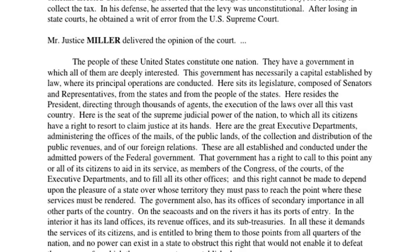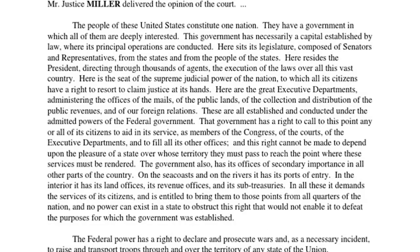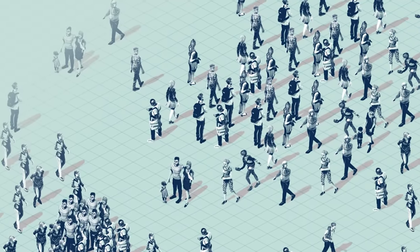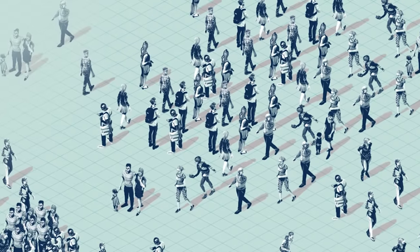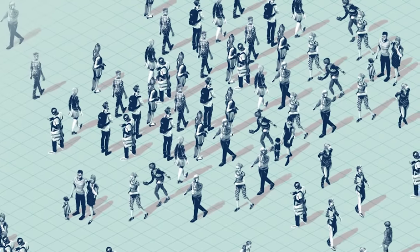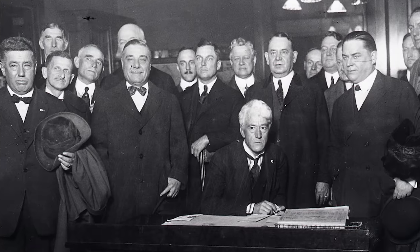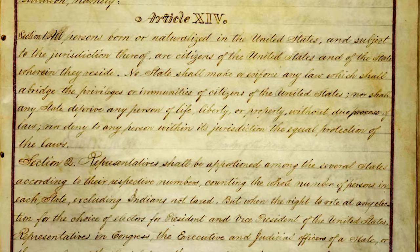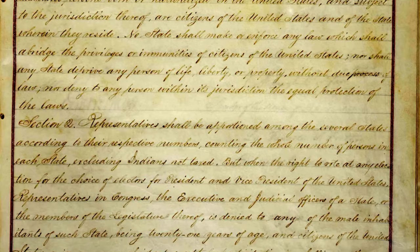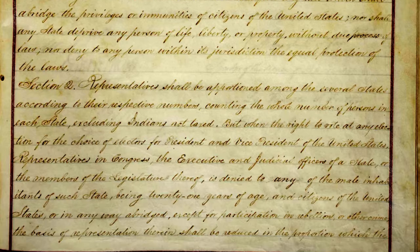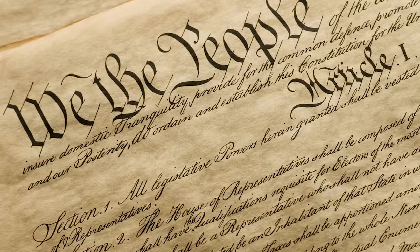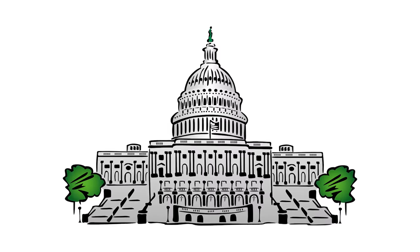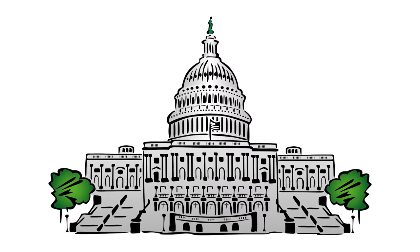Although the Crandall ruling recognized the freedom of movement as a fundamental right, it did not grant the right constitutional protection. Several years later, the 1920 case of Wheeler v. United States located the right to travel in the Privileges and Immunities Clause of the Constitution and granted the right constitutional protection, but also ruled that the Constitution did not grant the federal government the power to protect the freedom of movement.